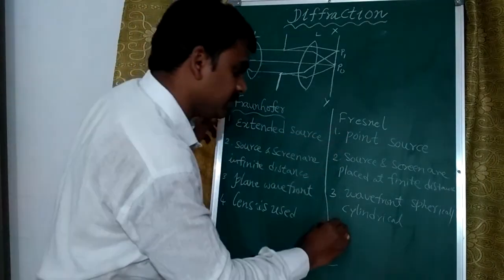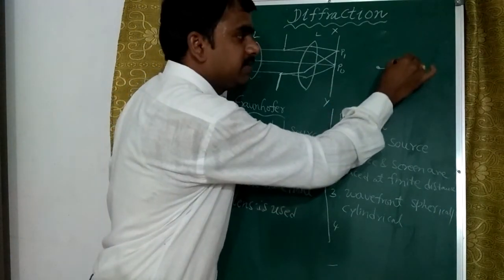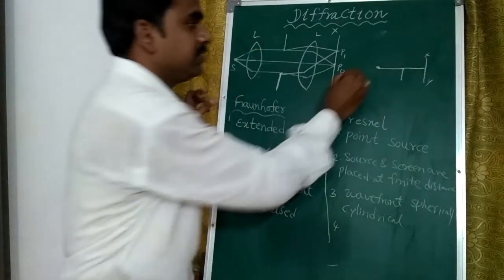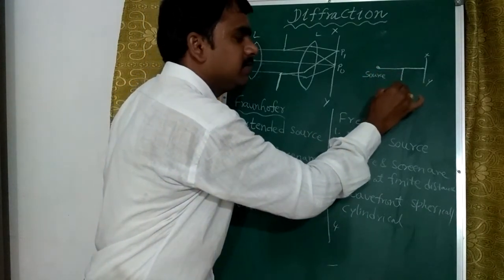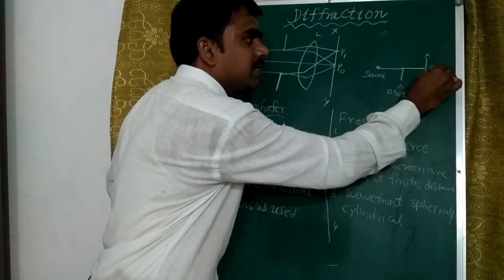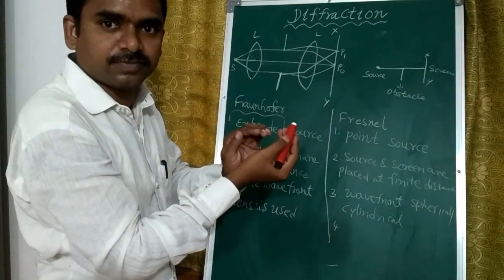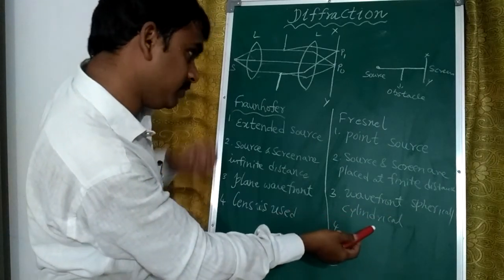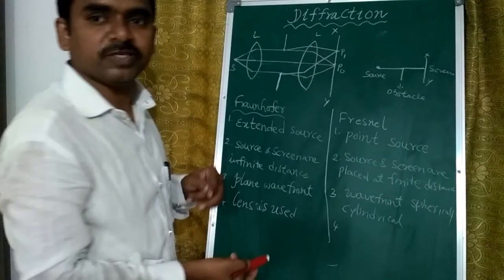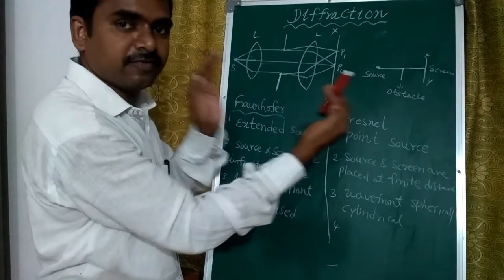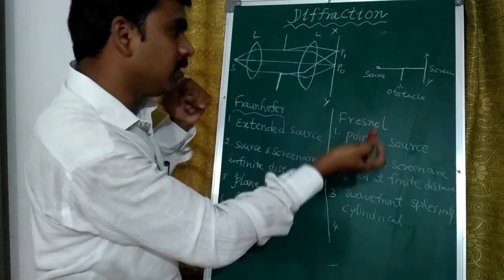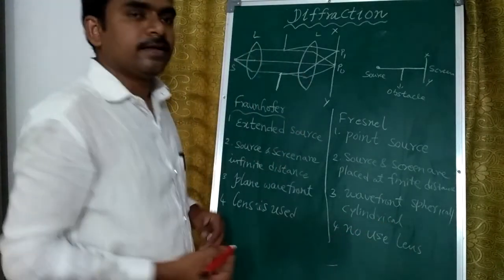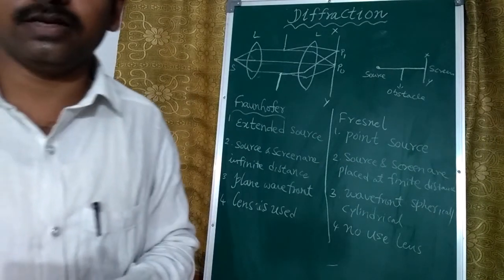In Fresnel's diffraction, we have a point source and an obstacle, with the screen placed at a finite — that is, a very small — distance from the obstacle. Here the wavefront is either spherical or cylindrical. Since the source and screen are at a finite distance, we do not need to use lenses. These are the main differences between Fraunhofer diffraction and Fresnel's diffraction.